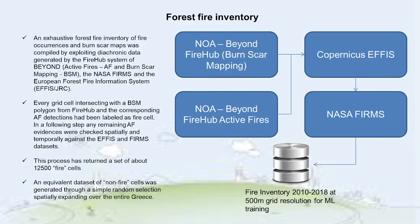As part of the creation of the machine learning dataset, a forest fire inventory of fire occurrences was created from 2010 to 2018. We exploited diachronic data generated by the Firehub system of BEYOND, the NASA FIRMS, and the European Forest Fire Information System. Every grid cell intersecting with a burned-area map polygon from Firehub and the corresponding active fire detections had been labelled as a fire cell. Any remaining active fire detections were then checked spatially and temporally against the EFFIS and FIRMS datasets. This process returned a set of about 12,500 fire cells. An equivalent dataset of non-fire cells was generated through a spatial and temporal random selection over the entire Greece within the same time period.